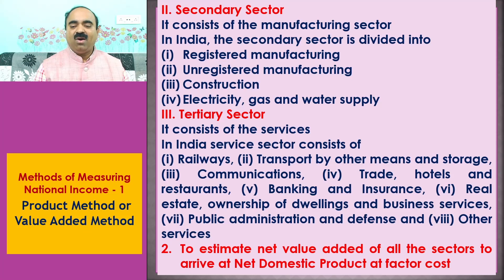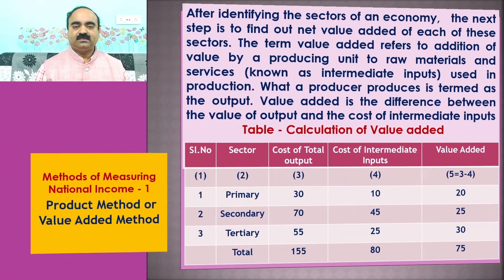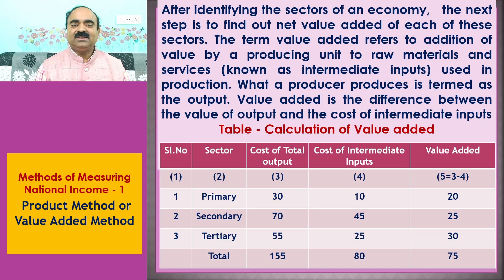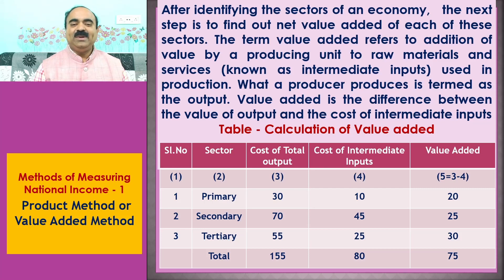Step 2: To estimate net value added of all the sectors to arrive at net domestic product at factor cost. After identifying the sectors of an economy, the next step is to find out net value added of each of these sectors. The term value added refers to the addition of value by a producing unit to raw materials and services — known as intermediate inputs — used in production. Value added is the difference between the value of output and the cost of intermediate inputs.